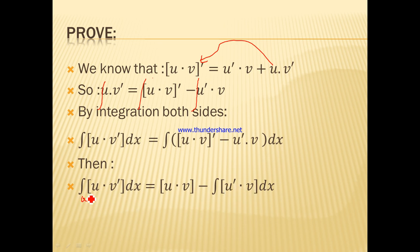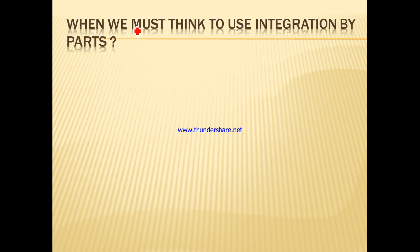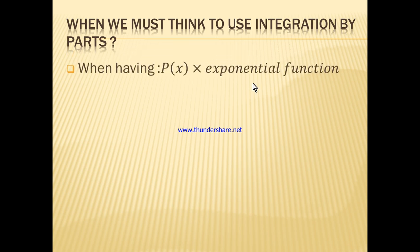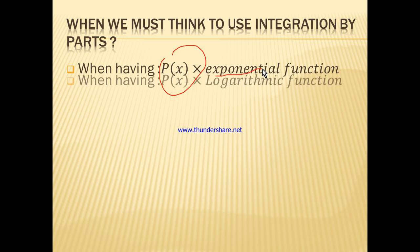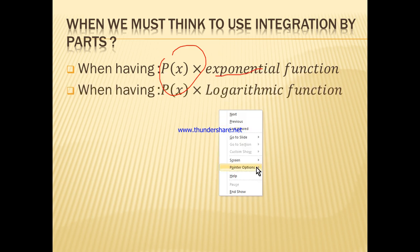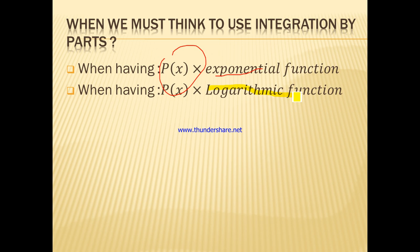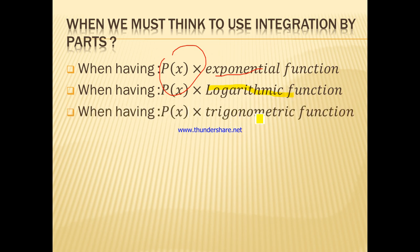If we have limits a and b, the definite integral form gives: [u·v] from a to b minus the integral from a to b of u'·v dx. We must think to use integration by parts when we have a polynomial times an exponential function, a polynomial times a logarithm function, a polynomial times a trigonometric function, or simply when the question asks us to do it.